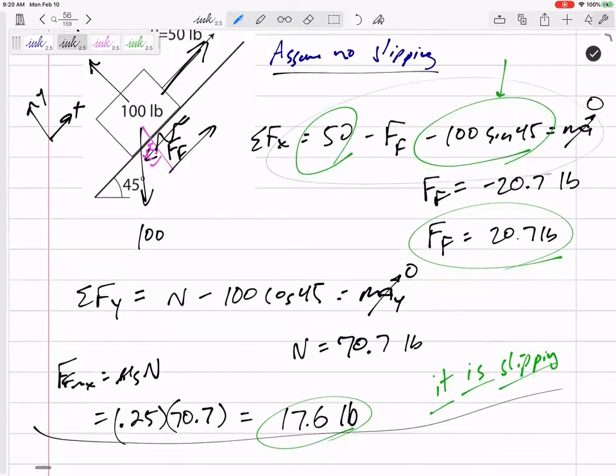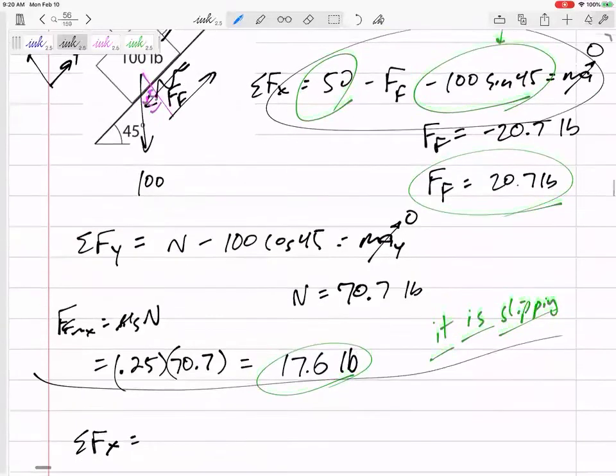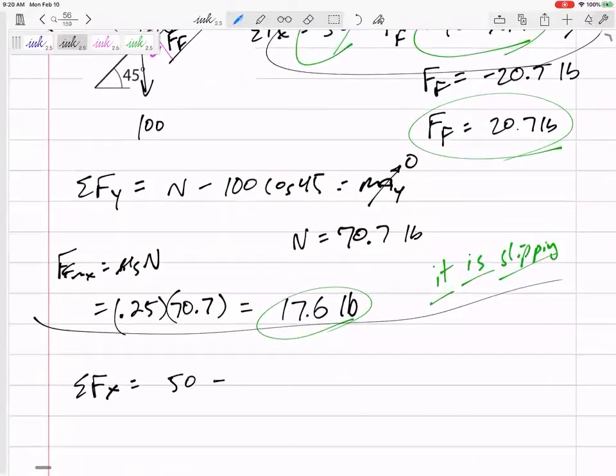So now if I sum the forces in the X, we can look at that equation or just look at the free body diagram again. Sum of the force in X: I would still have 50, I would have minus the force of friction, and now I know the force of friction is 0.15.